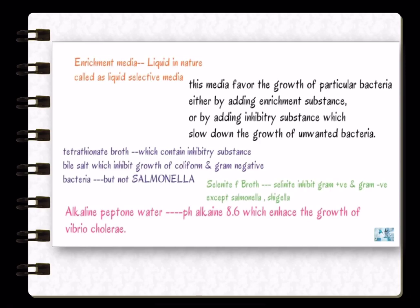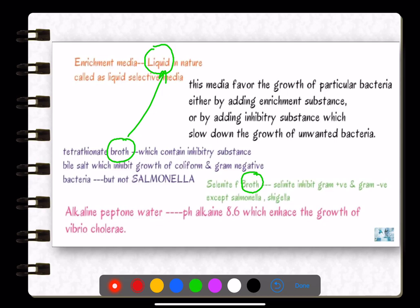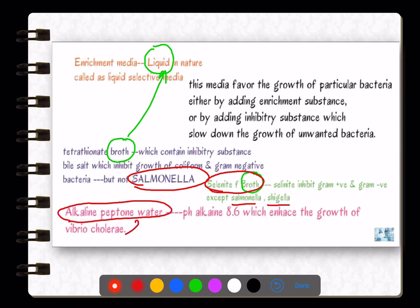The second type of complex media is enrichment media. Enriched media is solid, whereas enrichment media is liquid in nature — also called liquid selective media. If the example contains 'broth' in the name, it is liquid. Examples: tetrathionate broth for Salmonella, selenite F broth for Salmonella and Shigella, and alkaline peptone water for Vibrio.